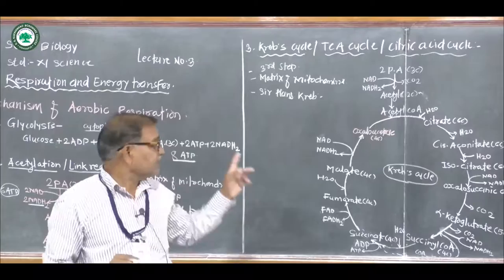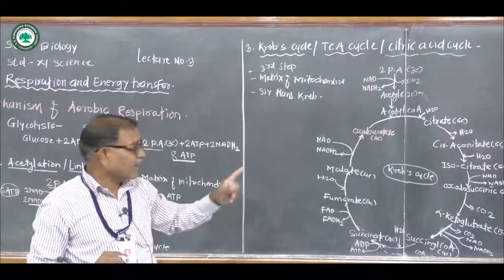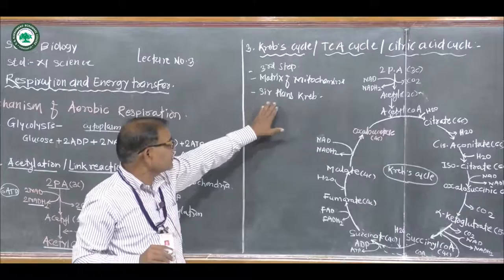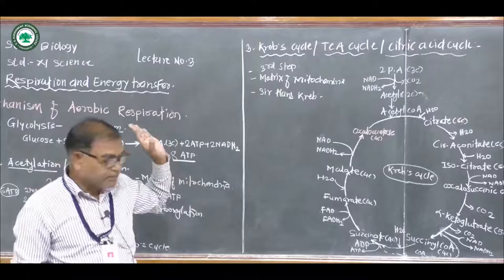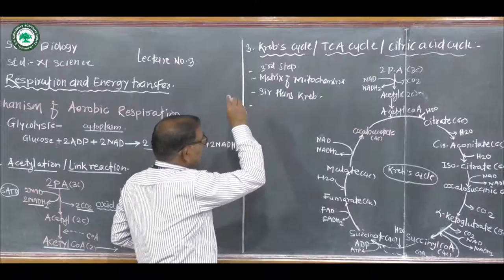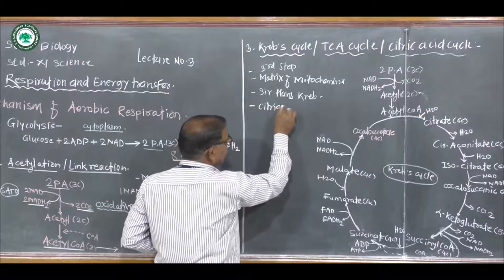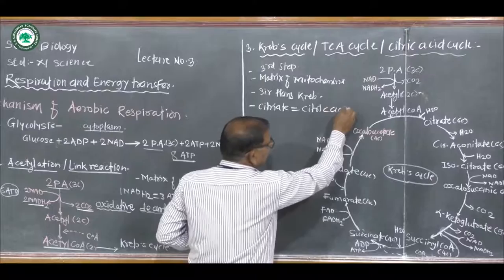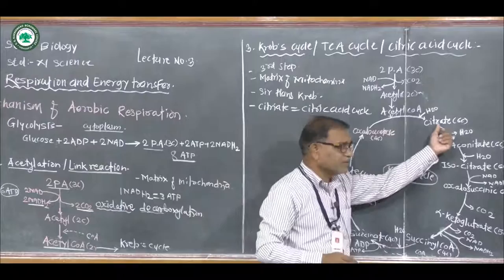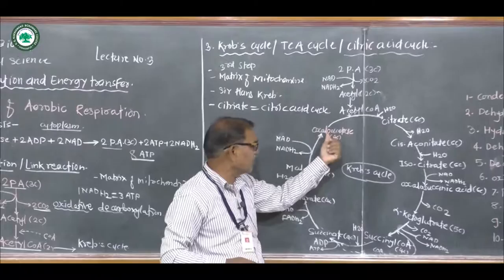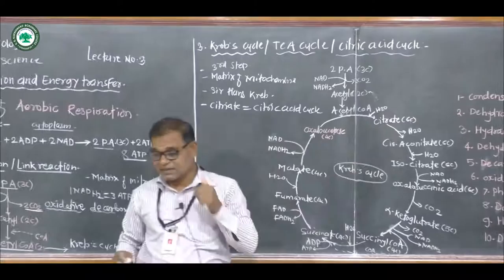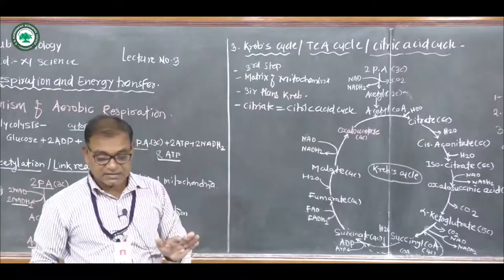The first stable compound in the cyclic breakdown of the respiratory substrate is citrate. The acetyl coenzyme A combines with oxaloacetate to form the first stable compound, citrate — a six-carbon-containing compound. Hence, this cycle is also called the citric acid cycle.